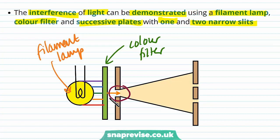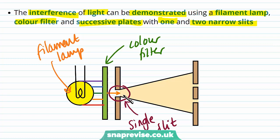In order to demonstrate interference and get a stable interference pattern, we need coherent light sources, which means they must have the same frequency. So to get light of a single frequency, we use a colour filter, which filters out certain colours and leaves us with only one frequency or colour of light. Another way to produce monochromatic light is to use a laser, because a laser only produces light of one colour.